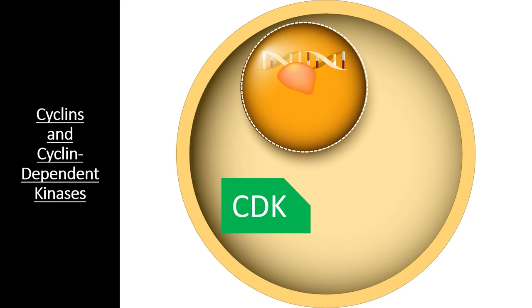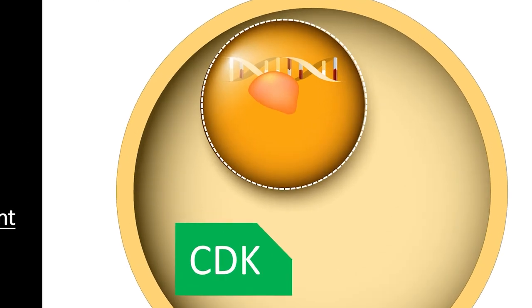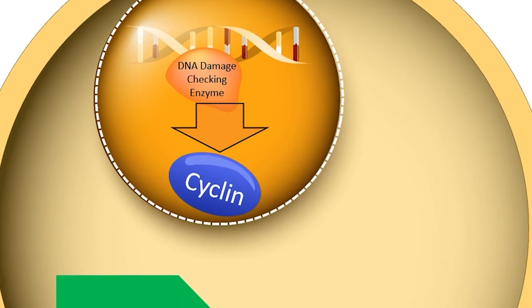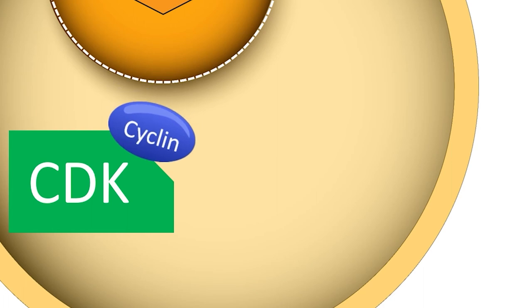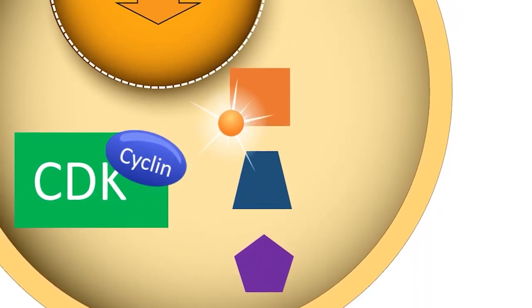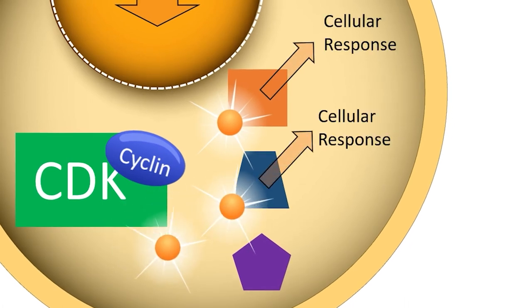When a cell checkpoint is passed, a signal transduction pathway is initiated that includes cyclins and CDKs. For example, if the cell cycle checkpoint is checking the DNA for damage, the enzyme that checks the DNA for damage can start the signal transduction pathway. When this enzyme is finished checking the DNA, it signals a process that creates cyclin proteins. This cyclin protein seeks out a cyclin-dependent kinase molecule, most of which are always present within the cell. When a cyclin binds to the CDK, it activates a phosphorylation cascade process. The CDK becomes phosphorylated from ATP and then transfers phosphate groups to a number of other proteins and molecules within the cell.